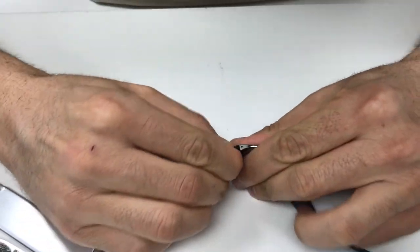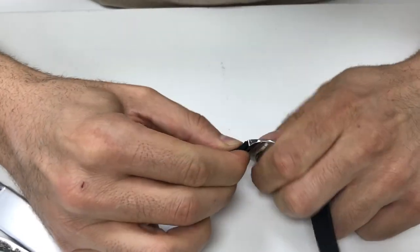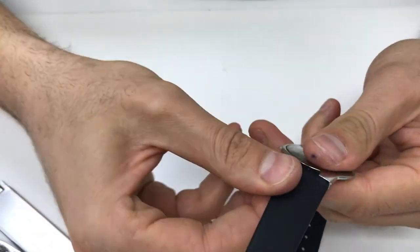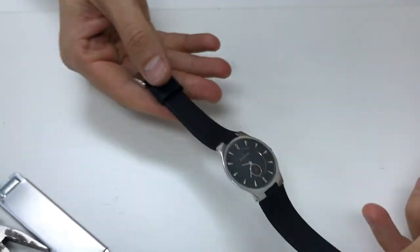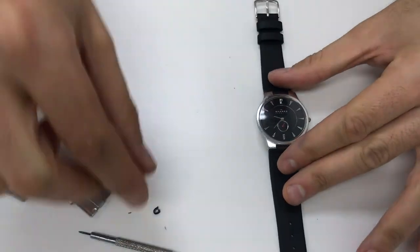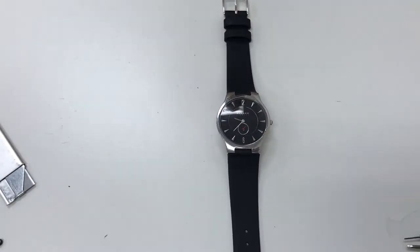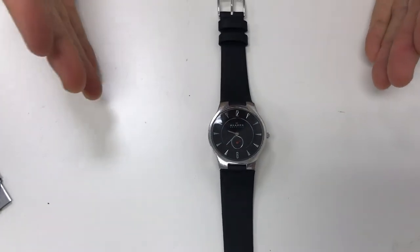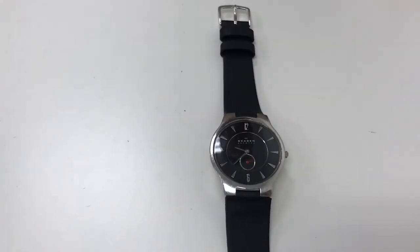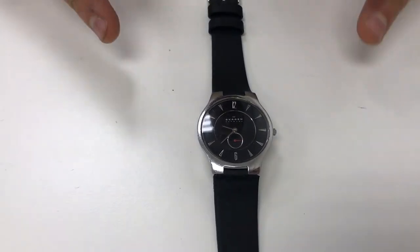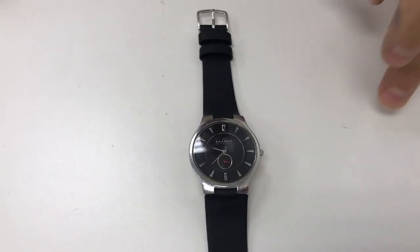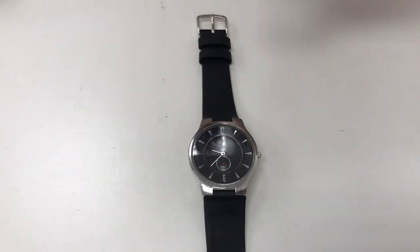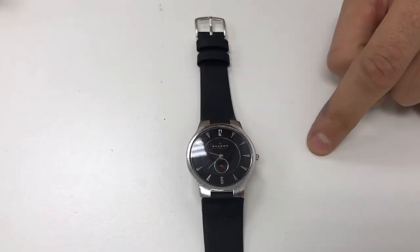So now here's the final product. As you can see we've customized the leather strap for this very popular blackface Skagen watch. Once again the model is 433 LSLB and there's two versions, one installs with spring bars, one installs with screws.